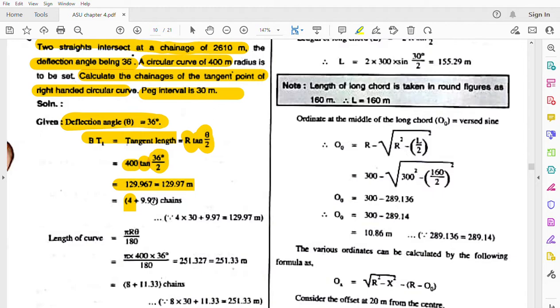Total you have to go 129 meters, meaning plus 9.97. This times 30 gives 120 plus 9.97, meaning 129.97 meters. So total chains that will be placed is 4 plus 9.97 chains. See, here the description is given. So this is the first calculation for BT1.